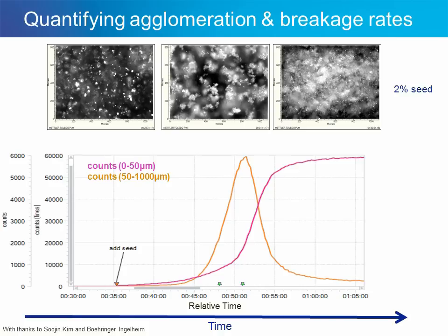We can see the point at which seed is added at around 35 minutes. We then begin to see very large counts increase, indicating this agglomeration step, right up to about 50 minutes. Then those large counts — the orange trend — begin to decrease, and the smaller counts between 0 and 50 microns increase before we reach a steady state at around 1 hour or 1 hour and 5 minutes. What's really important here is the dynamics of this process around seeding: there is a significant agglomeration and breakage event that occurs, and it's important to understand this as the crystallization process gets developed and ultimately scaled up.